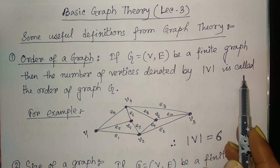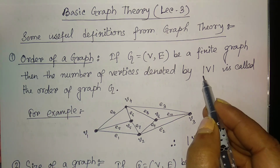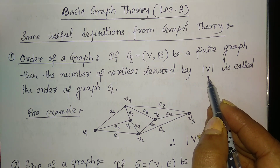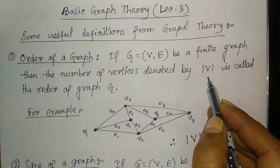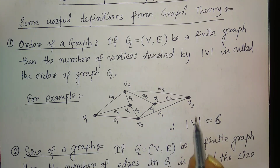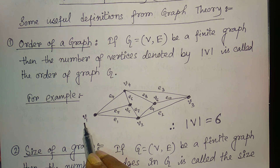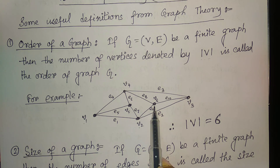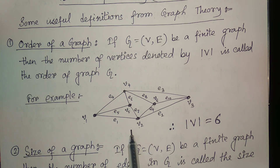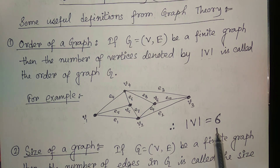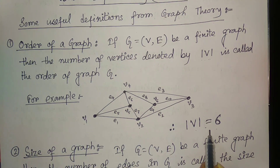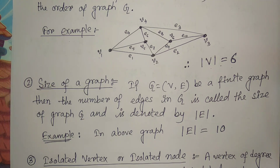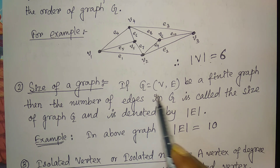Mod v is the cardinality of v — that means how many vertices are there in the vertex set. For example, if this is our graph, then here we have v1, v2, v3, v4, v5, and v6: total six vertices. So the cardinality of v is six, and the order of the graph g is six.